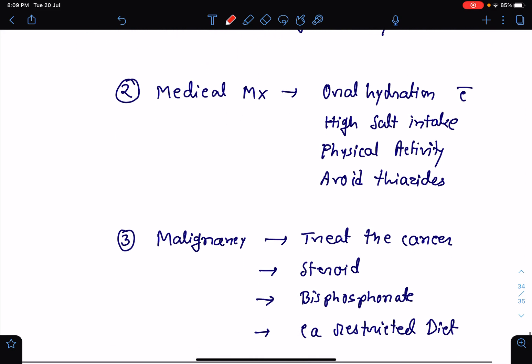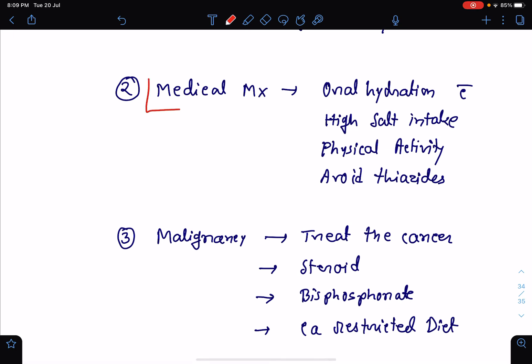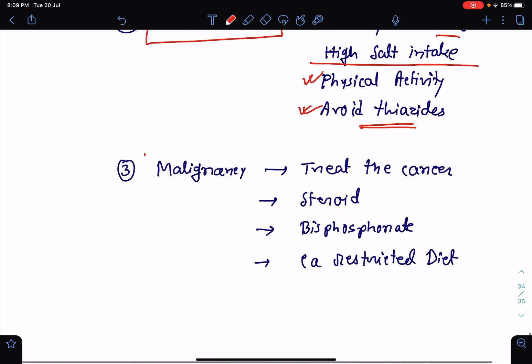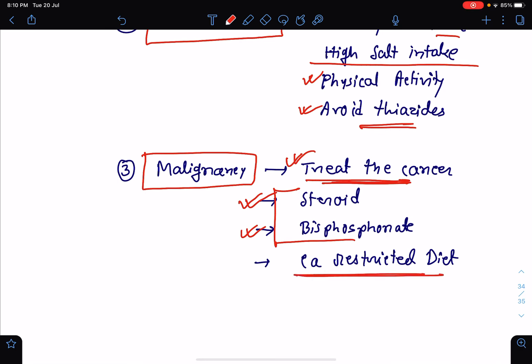If there is no indication of parathyroidectomy, the patient may undergo medical management also. For medical management, we will encourage the patient for liberal oral hydration with high salt intake. There should be encouragement of physical activity to prevent the bony resorption of calcium. Thiazide groups of drugs to be avoided because thiazide causes hypercalcemia. If it is a case of malignancy, then very importantly, we need to treat the cancer. If we talk about the drugs, glucocorticoids and bisphosphonates can be used to manage the hypercalcemia. We should be advising calcium-restricted diet, probably less than 400 mg per day.